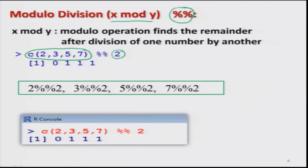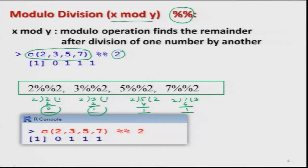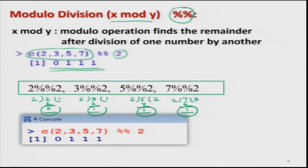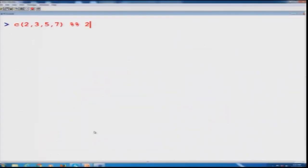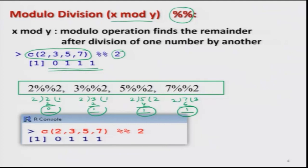For 2 divided by 2, 2 ones are 2 and the remainder is 0. For 5 divided by 2, 2 twos are 4 and the remainder is 1. For 7 divided by 2, 2 threes are 6 and the remainder is 1. So the remainders — 0, 1, 1, 1 — are reported as the result. This is the procedure for modulo division, and the screenshot of this operation in R is shown here.